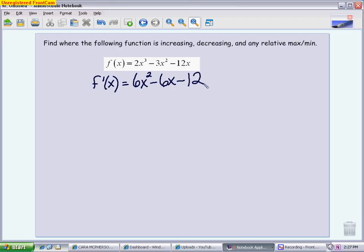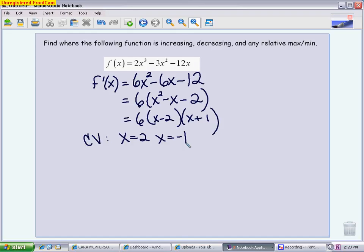Take your derivative. Be careful because your first derivative sets up everything, so if you accidentally derive incorrectly, it will throw off your entire problem. Factor, so take out a 6, and then factor even further. You get x minus 2, x plus 1. Your critical values then, in this case, are where the derivative is 0. You won't have any undefined values here. You get x equals 2 and x equals negative 1. Get in the habit of labeling them with CV so you know what you found.